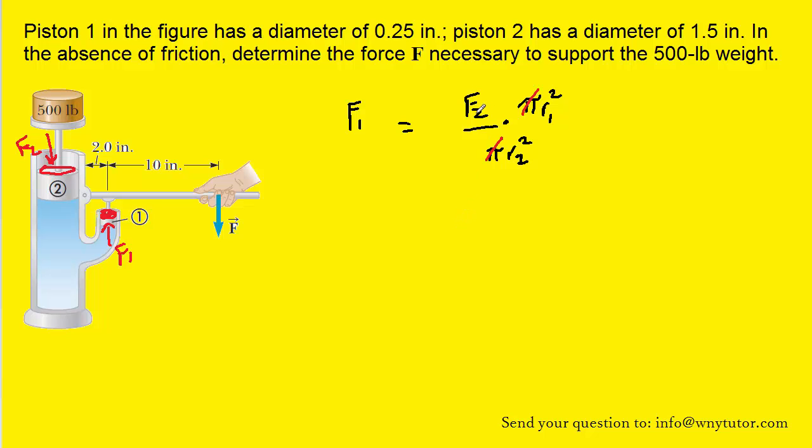We know F2 is 500 pounds. The radii of each piston are also given. We just have to note they were given in the form of a diameter, so you've got to divide each diameter by 2 to get the radii. When we calculate F1 we get roughly 13.9 newtons. We can label that on the diagram.